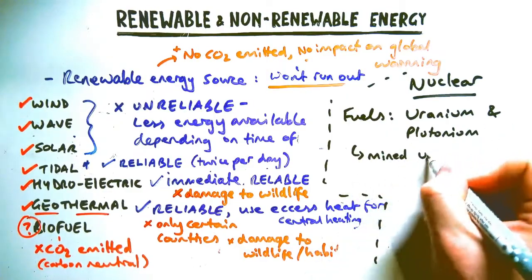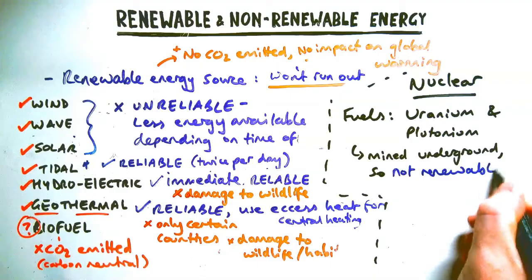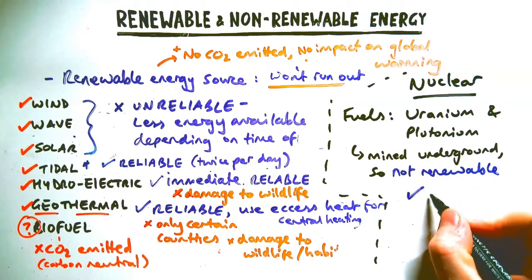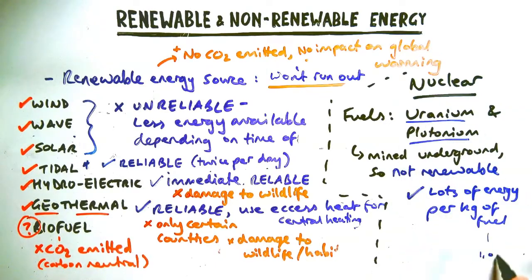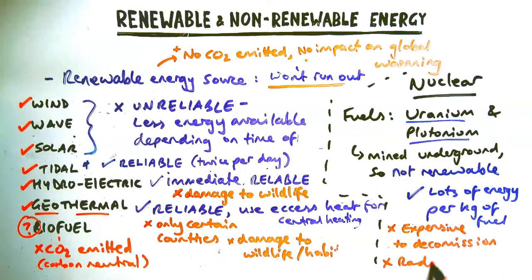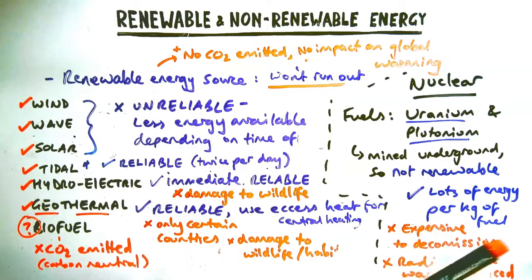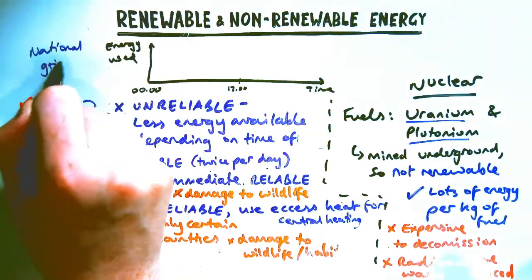Nuclear power is not renewable because the fuels it uses — uranium and plutonium — are mined underground and will run out one day, though nowhere near as soon as fossil fuels. The good part of nuclear power is that there's a lot of energy per kilogram: one kilogram of uranium has about a million times as much energy as one kilogram of coal. The downside — and don't talk about nuclear explosions — is that it's very expensive to decommission (shut down) due to all the radioactive waste produced, costing millions and millions of pounds.